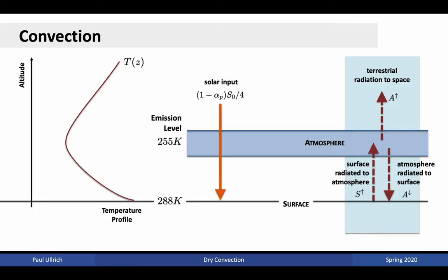When and why does convection occur? Convection occurs because solar input is continuously warming the surface. The surface has a temperature of approximately 288 Kelvin, and the atmosphere emission level is about 255 Kelvin. However, the radiative exchange is not sufficient to balance this underlying energy model. Instead, we need to include convective exchanges as well. These occur when the surface temperature becomes too warm, triggering rising air.